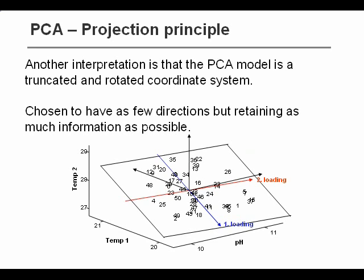So another way to interpret the PCA model is that we rotate the original three axes, and then we truncate them. We remove the directions in which there is only a little bit of variation because we assume that that will then be noise.